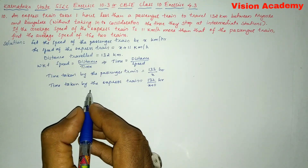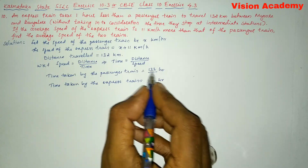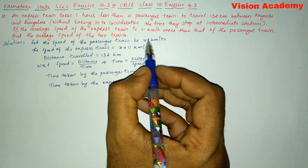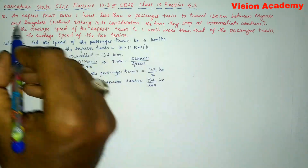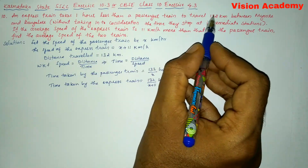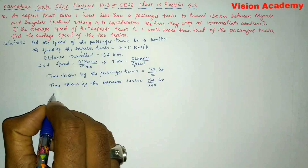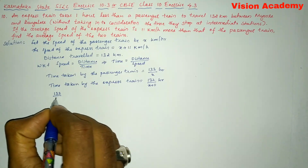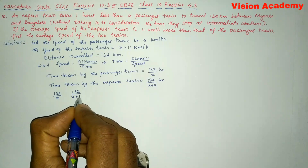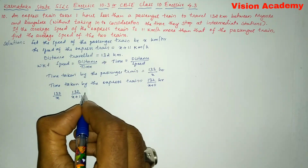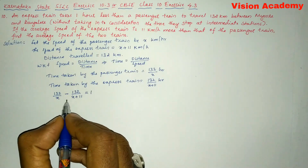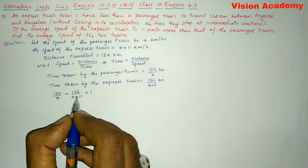Now we will write this in the form of an expression. According to the question, an express train takes one hour less than a passenger train to travel, so we write: 132 divided by x minus 132 divided by x plus 11 equals 1.